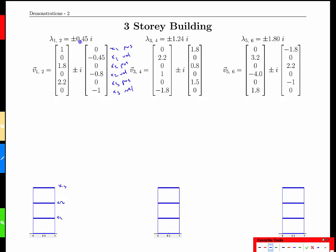Specifically, if we look at this slow frequency, which is the lowest value of all three, it has a positive 1 for the x1 position, 1.8, and then 2.2 for the other two positions. What that will look like, we expect, is that when we stimulate this building or shake it with a frequency of oscillation at 0.45 rads per second...